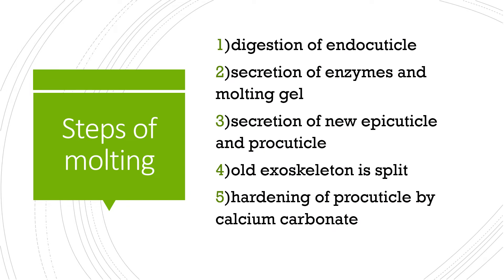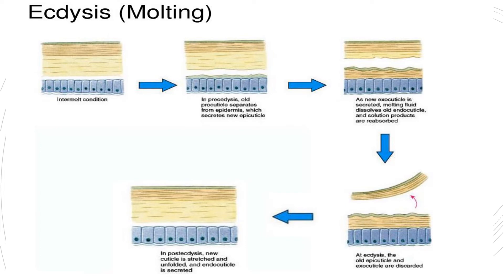Moving towards the steps of molting — how many steps does the arthropod pass through to remove or shed its exoskeleton? There are a total of five steps of molting. Let's study them one by one with the help of a diagram. In the diagram you can see a complete exoskeleton of an arthropod, with the exoskeleton portion and the cells of the epidermis clearly shown.